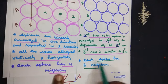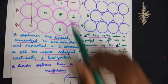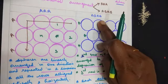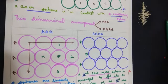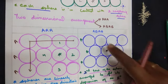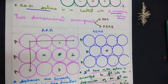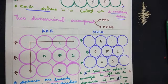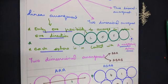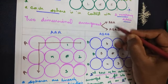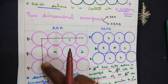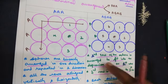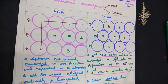The main important point in ABAB type is that each sphere has six neighbors. Let's prove it: for this sphere of interest, counting all surrounding touching spheres — one, two, three, four, five, six. So in linear arrangement there are two neighbors; in two-dimensional AA type there are four neighbors; in ABAB type the number of neighbors is six.